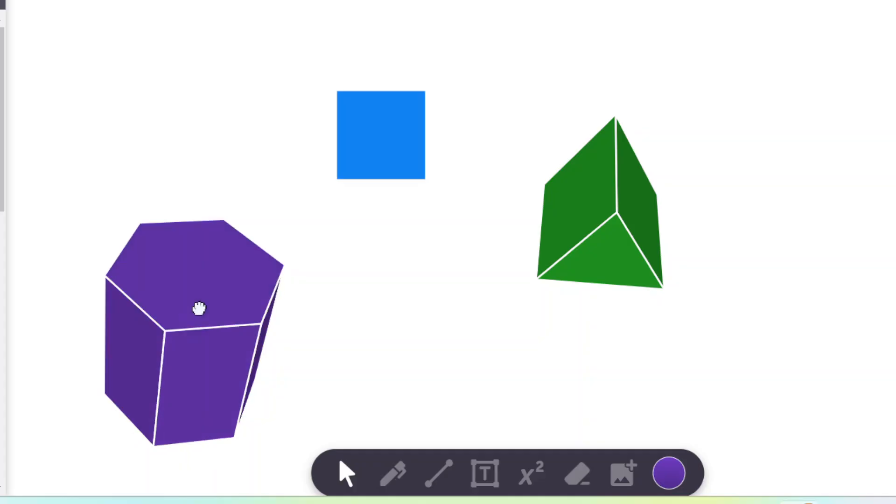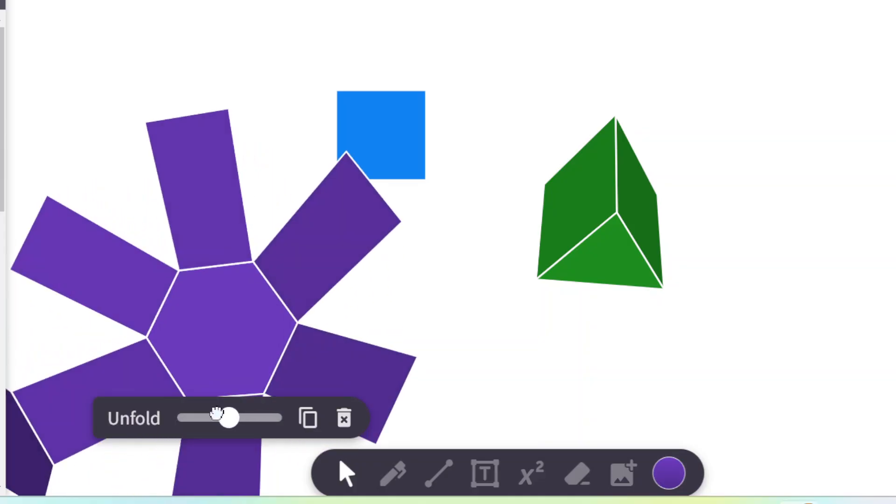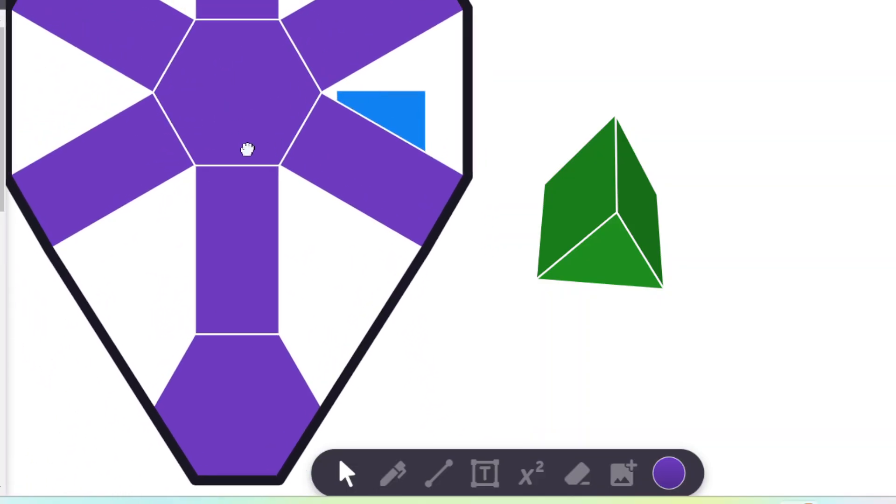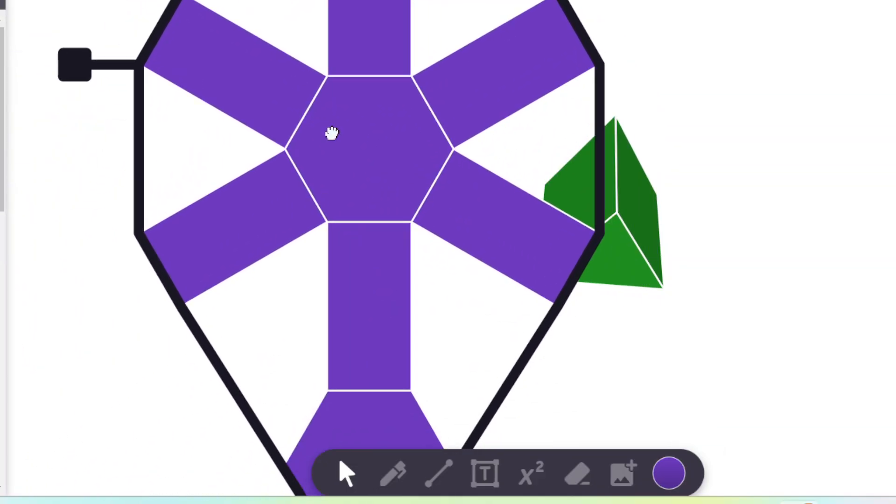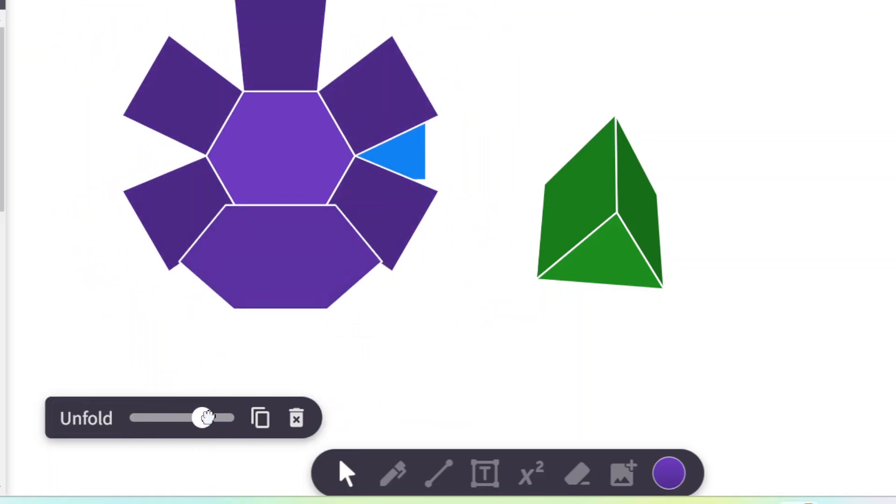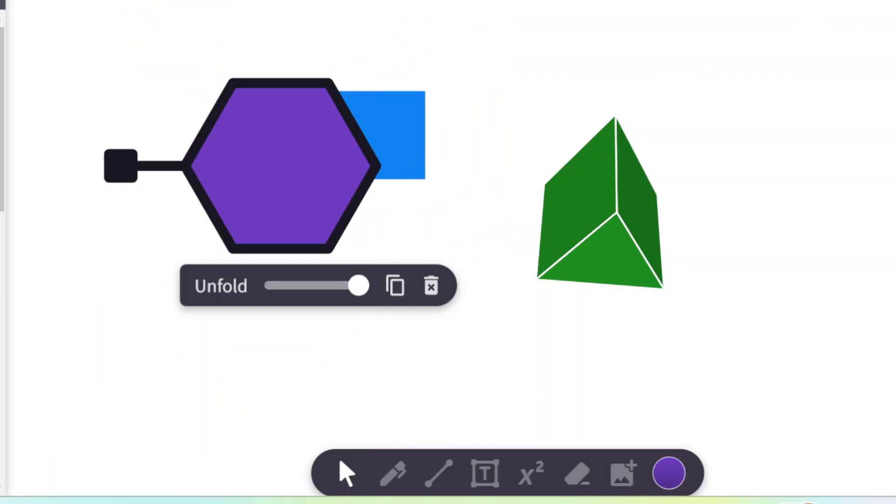Okay. And then here, this one is a hexagonal prism. Just to show you what that looks like. It folds out into two hexagons and then six rectangles all around the sides. Okay. So again, really useful to be able to do this, create these nets so you can see what each shape is made of on 2D paper.